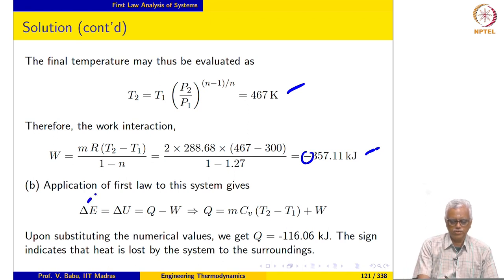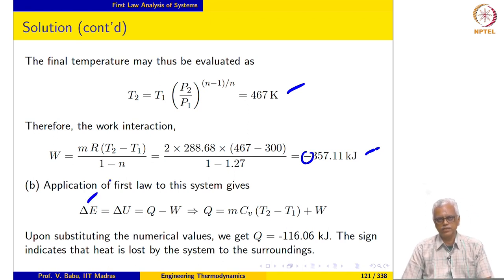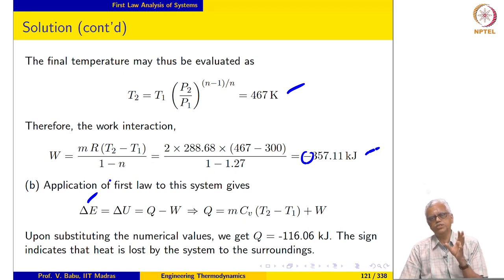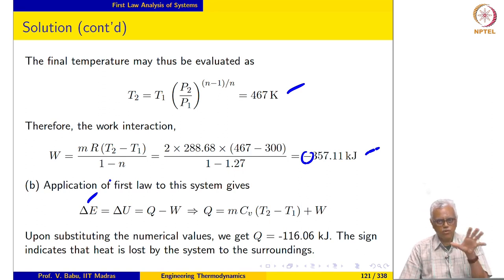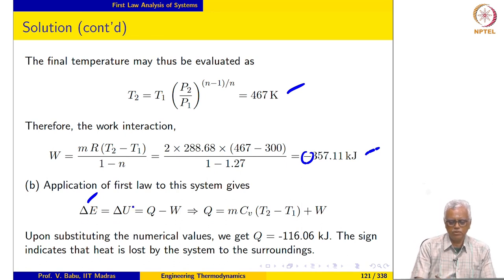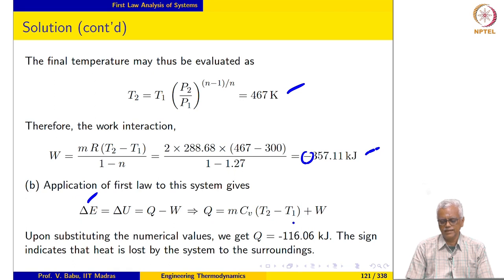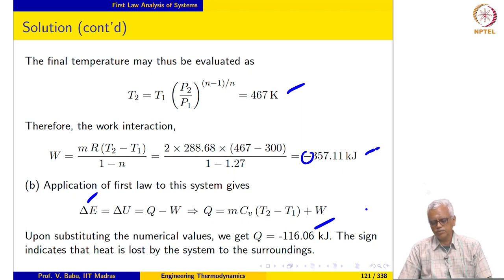We now apply first law to the system: delta E equals delta U equals Q minus W. There is no change in potential or kinetic energy, and the only work is displacement work. Delta U equals mC_v times T2 minus T1. Substituting the values, Q comes out to be minus 116.06 kJ. The negative sign indicates that heat is lost by the system to the surroundings as the air is compressed.